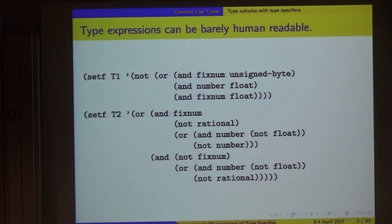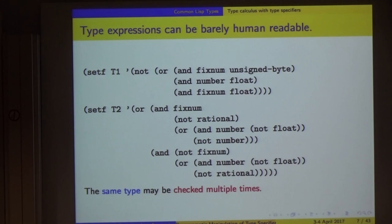Here is an example of two type specifiers. I hope that nobody in the room understands this. My goal is to come up with something that you can imagine probably how you have manipulated, but what it means is not exactly clear. If you were going to use one of these types to ask is an object an element of one of these types, you can imagine that a naive implementation of typeP might have to, for example with T2, given an object, ask is it a fixnum, ask is it irrational, ask is it a number, and then ask is it a number again in the not numberP number part. In the second clause you have the same questions again.